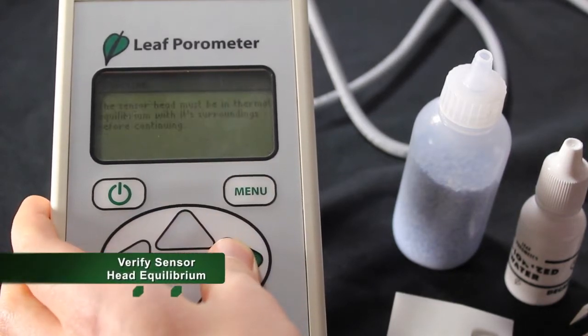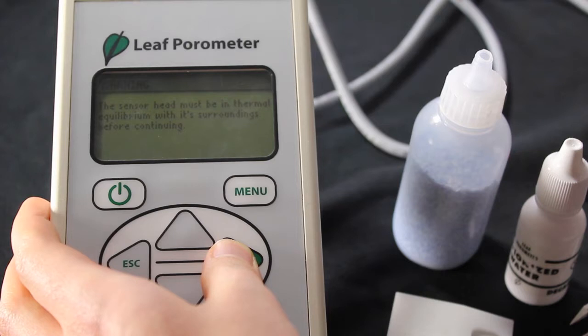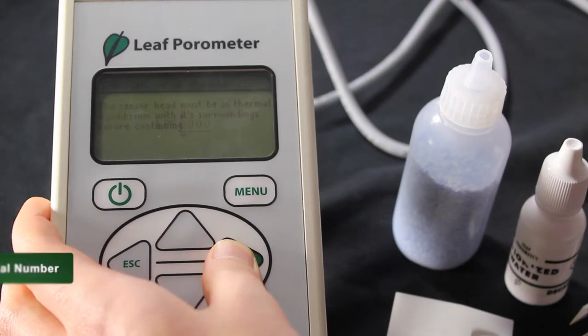It is important that the porometer sensor head, calibration block, and DI water are all in thermal equilibrium with the environment where measurements will be taken. It may take upwards of 10 minutes for this to happen depending on the differences between storage and measurement conditions. The temperature of the sensor will display on the screen. Press enter to proceed to the next step.